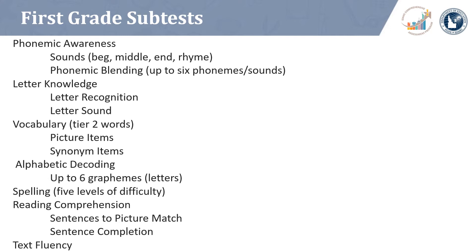Vocabulary for first grade will begin with picture items and progress to synonym items along with picture items. Alphabetic decoding will be new to some first grade students who did not reach it in kindergarten, beginning with two-letter nonsense words and progressing to words as long as six letters. Spelling begins with simple decodable words and progresses to high frequency words as students show progress. Reading comprehension will begin with picture matching and progress to sentence completion. Fluency will be administered to first grade students beginning mid-year.